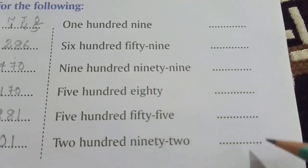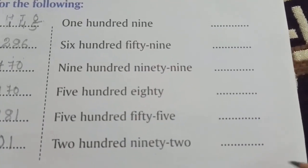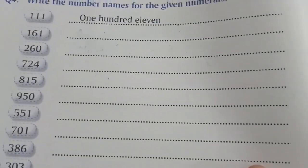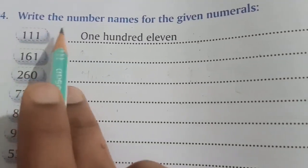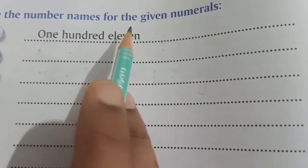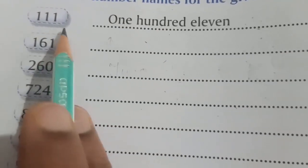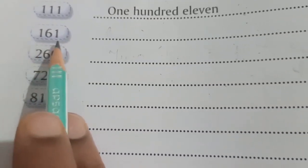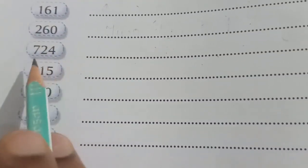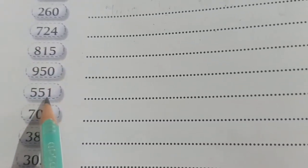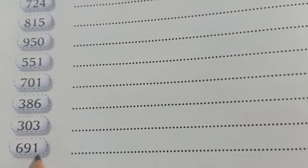Similarly you will do these questions. Now turn to page number twenty-four, question number four: Write the number names for the given numerals. The numerals given are 111, 161, 260, 724, 815, 950, 551, 701, 386, 303, and 691, and you have to write their names in words.